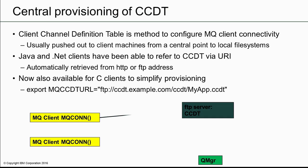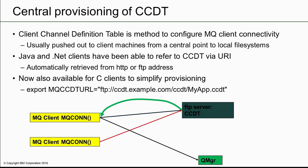The MQ clients can now all refer to a central repository for the CCDT without needing to have the file pushed out to a local file system. Instead, the location of the CCDT can be defined as an FTP or HTTP server. This has been possible with the Java and .NET clients, but has now been extended to the C client interface.